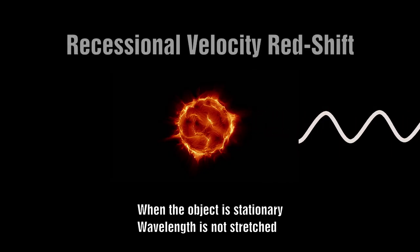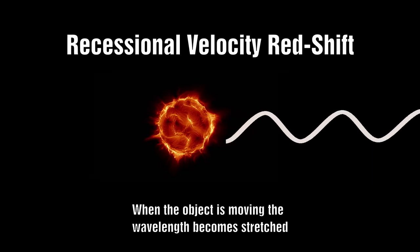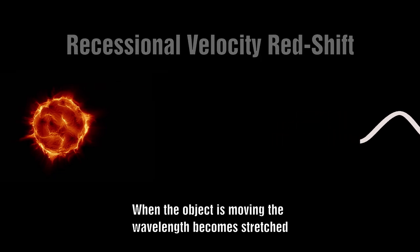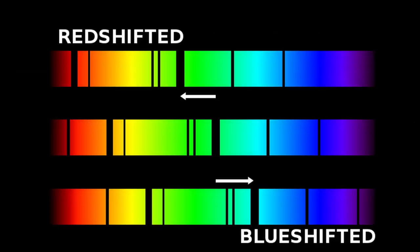The first one, obviously, is recessional velocity. Here, an object would move away from us, and that motion would cause the light waves to become stretched. This is the classic Doppler shift. This is where we get the notion that if it's shifted, it implies the object is moving away from us. Obviously, if it's moving towards us, the waves get compressed and you end up with blue shift.